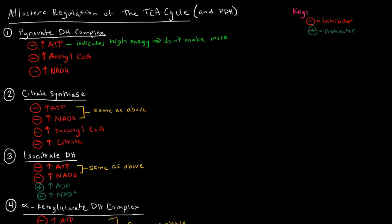High levels of acetyl-CoA also inhibit the pyruvate dehydrogenase complex. First, acetyl-CoA is the product of this reaction, so it feeds back negatively — negative feedback or feedback inhibition. There's no sense in creating more. Second, if there's a buildup of acetyl-CoA, these acetyl-CoAs are supposed to go through the TCA cycle. If they're not going through, that could mean the TCA cycle is not working — it's backed up and not using up acetyl-CoAs. So don't make more.